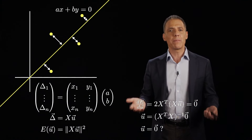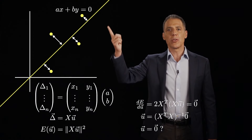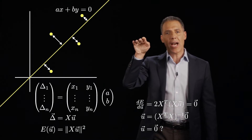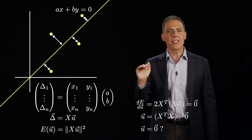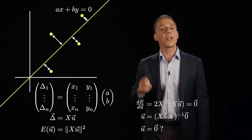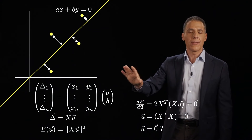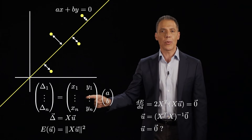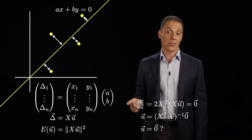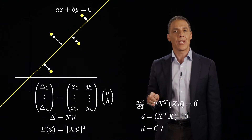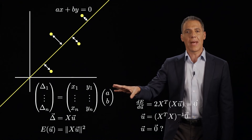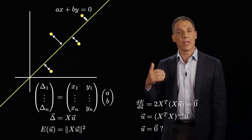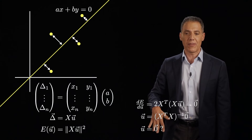Remember when we computed the shortest distance, we had on top the absolute value of AX plus BY, and in the denominator the square root of A squared plus B squared. We said: let's assume A and B form a unit vector, so the square root of A squared plus B squared equals one. But putting a zero vector in violates that assumption — the norm is not one if both are zero. So we need to condition this minimization to avoid that degenerate solution, which is valid mathematically but violates our unit-length assumption.